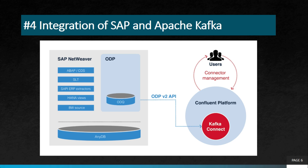The next project is integration of SAP and Apache Kafka. This project involves integrating SAP systems with Apache Kafka, an open source streaming platform that enables real-time data processing. This integration helps businesses to stream and process data from SAP systems in real time and take immediate action.